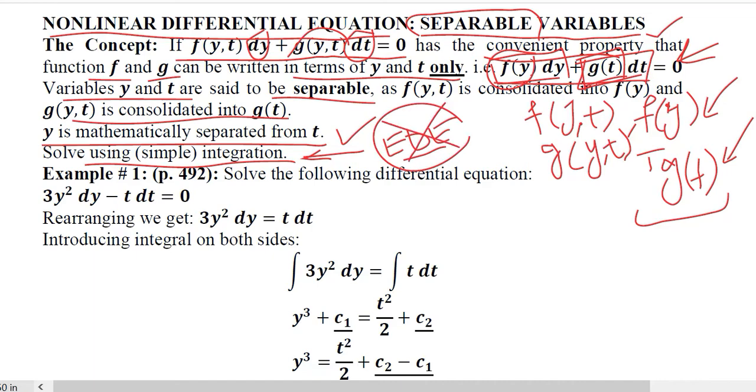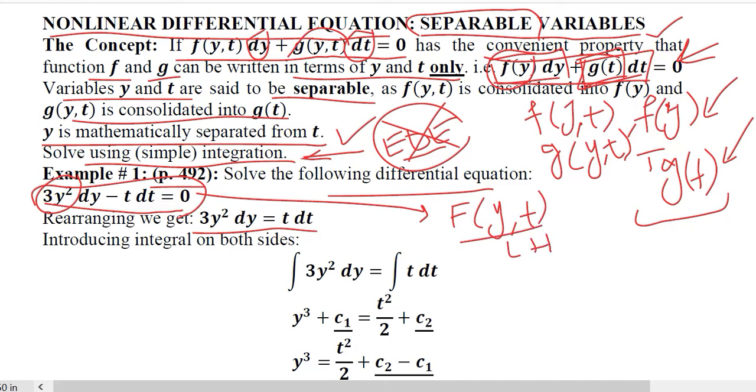Let's take the example from page number 492 of Alpha C. Chiang, where we are given a differential equation: 3y² dy - t dt = 0. This is clearly a case of a nonlinear differential equation because the dependent variable is appearing in the form of a square. The thing we need to do in this method is simply to separate the two variables. You can see the variables were combined on the left-hand side.